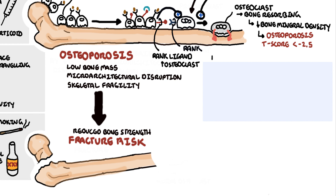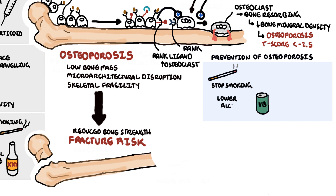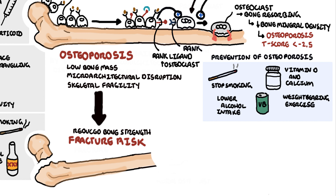The prevention of osteoporosis is quite straightforward: stop smoking, lower alcohol intake, make sure to have enough calcium and vitamin D. There are also weight bearing exercises, which are recommended for most women with premenopausal osteoporosis. Interestingly, there's no convincing evidence that high intensity exercise such as running is of greater benefit than lower intensity exercise such as walking.